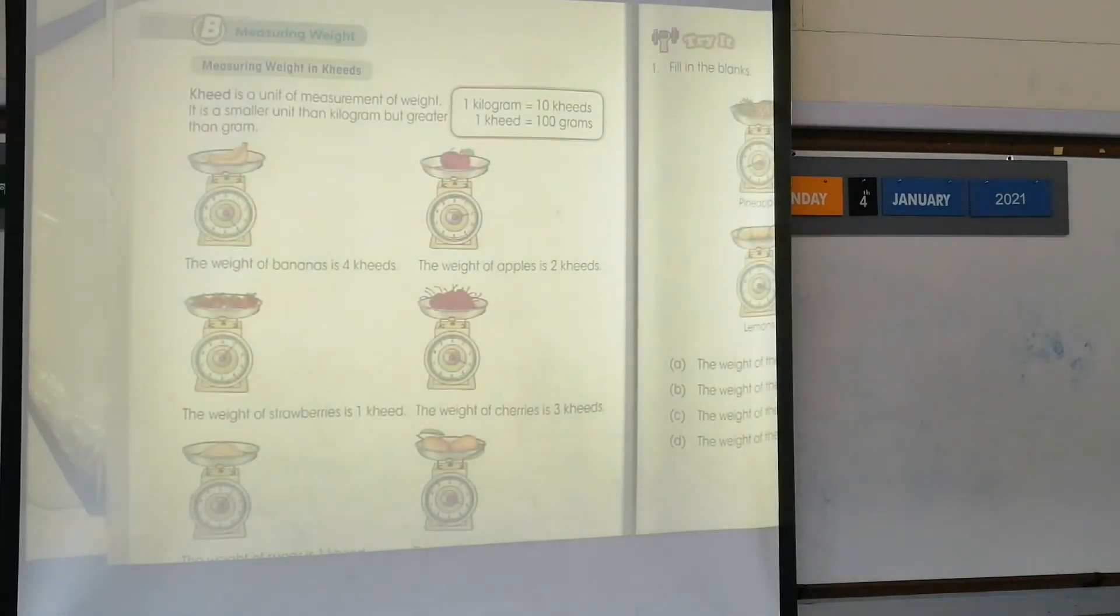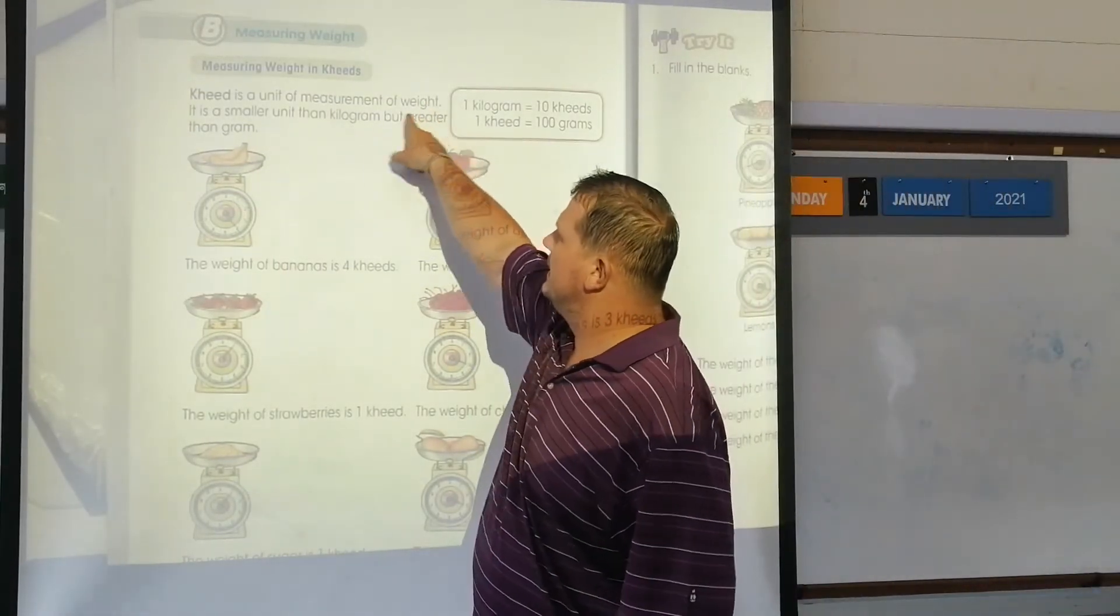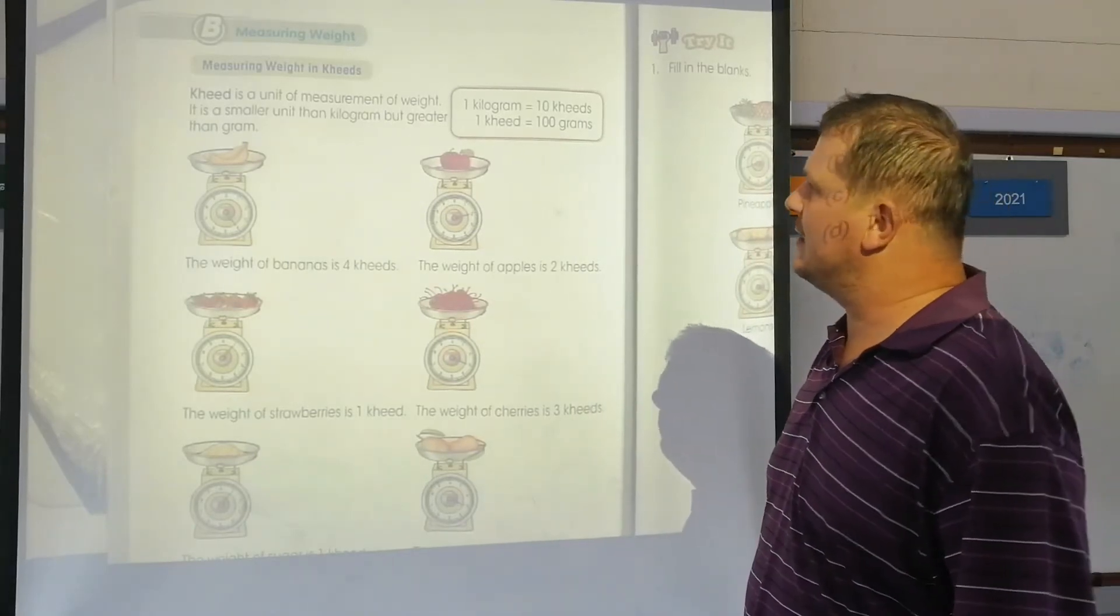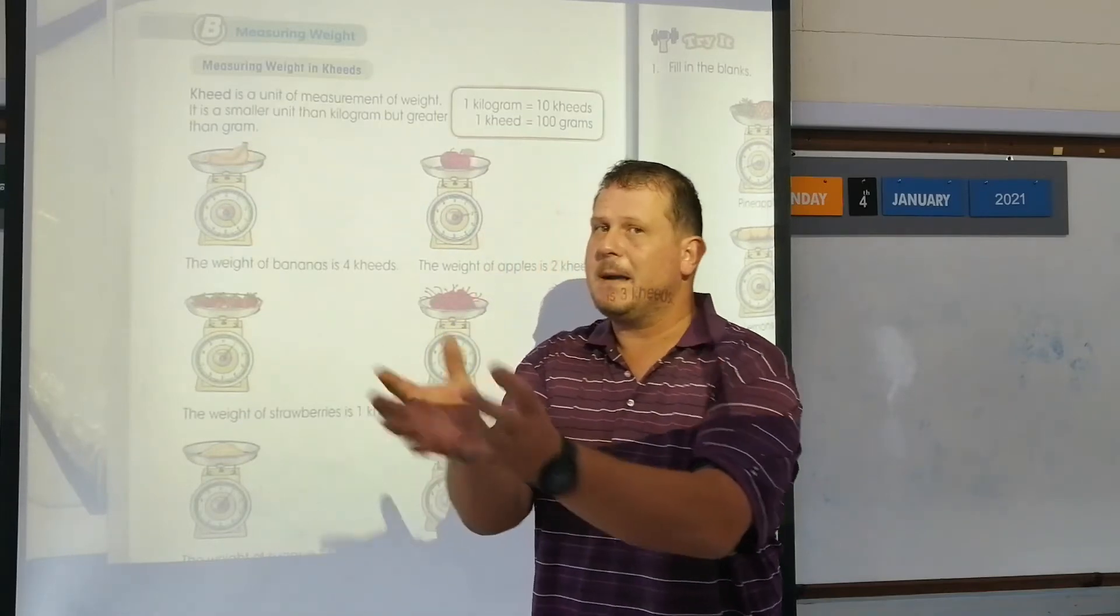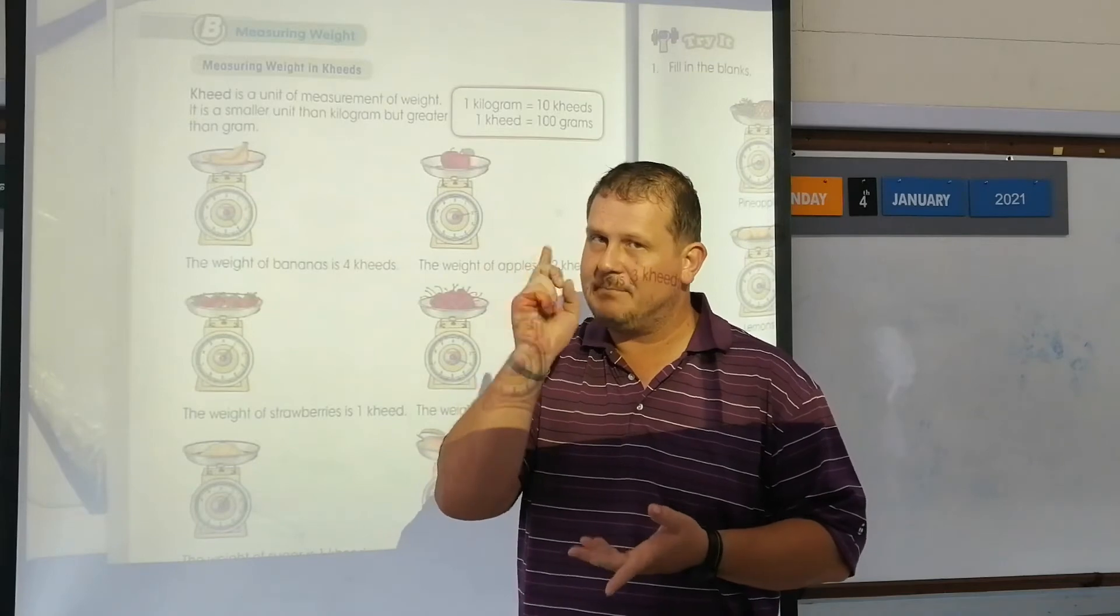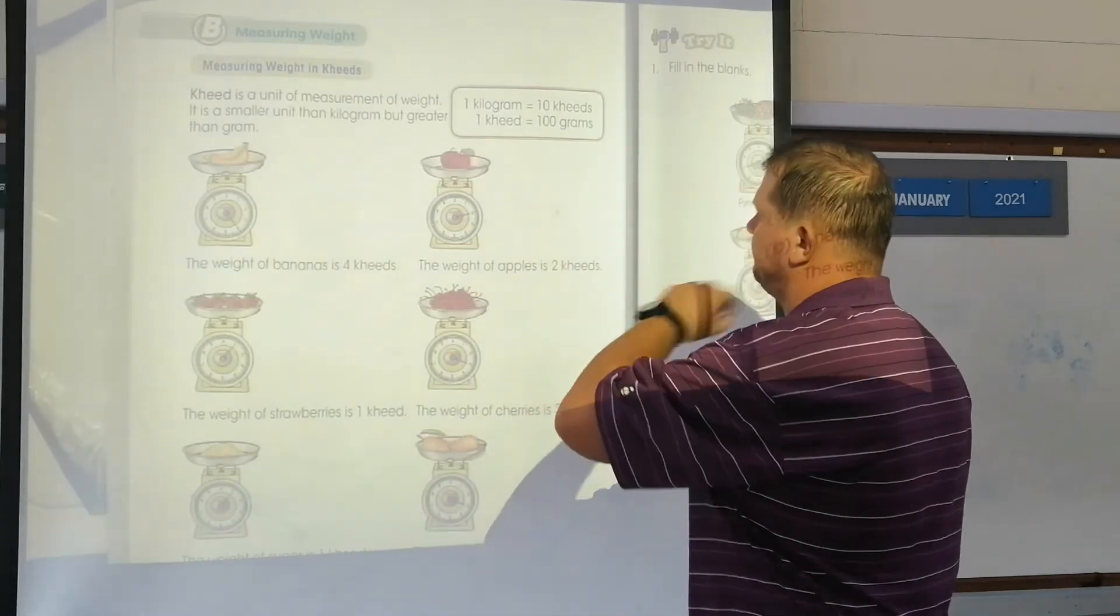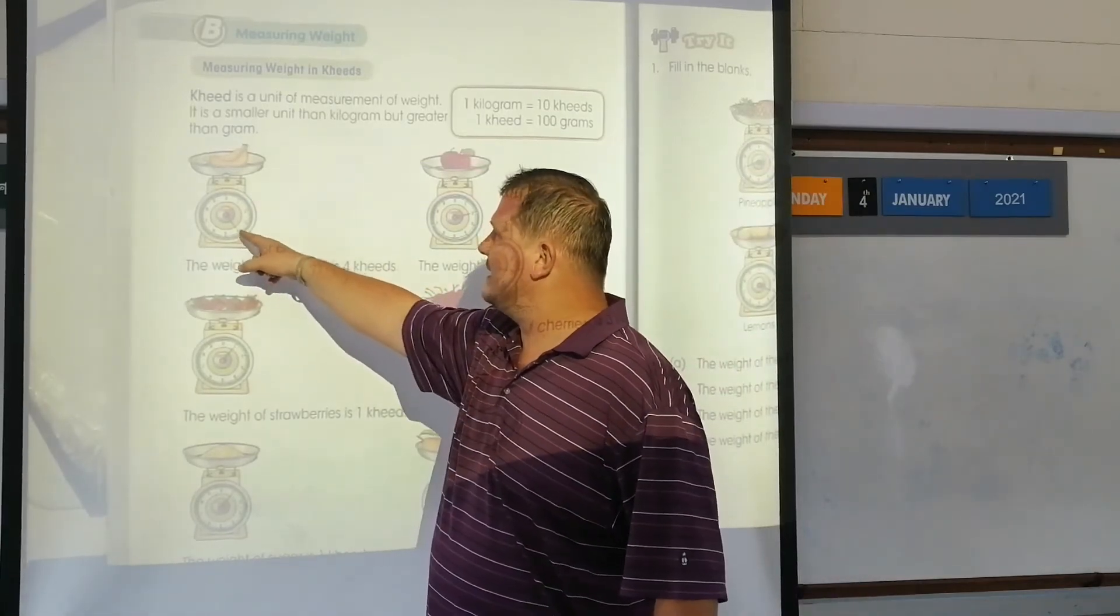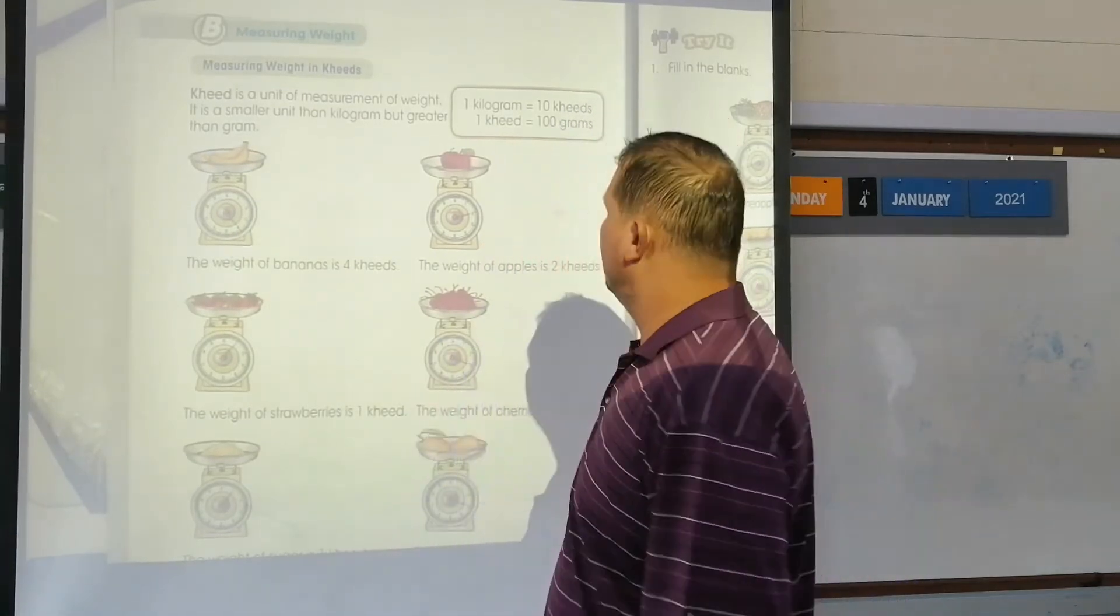Measuring weight. Key is a unit of measurement of weight. It is a smaller unit than kilogram but greater than gram. So key is less than kilograms but more than grams. Remember that, because that might just be a question in the test. The weight of four bananas is four keys, so this scale obviously measures in keys.